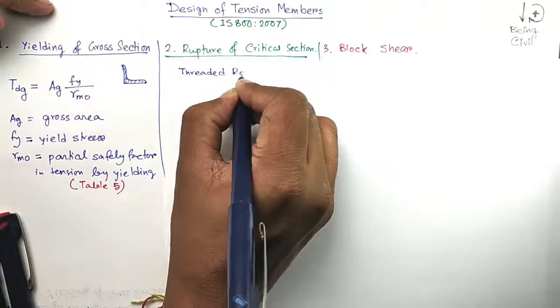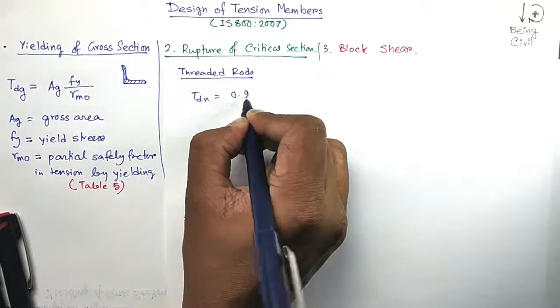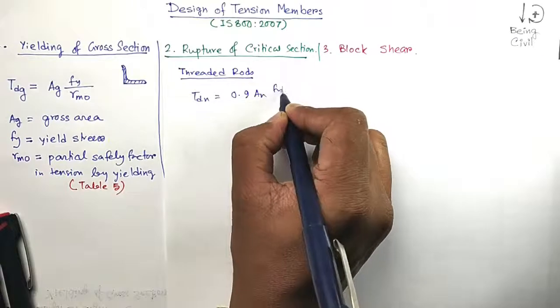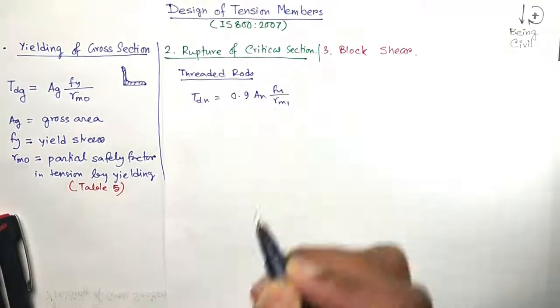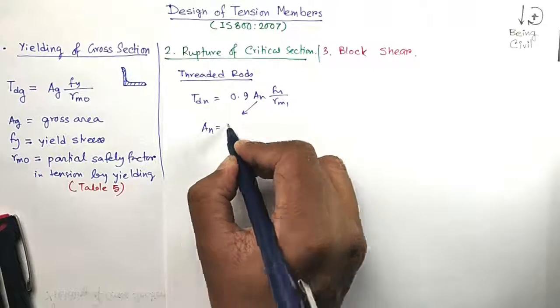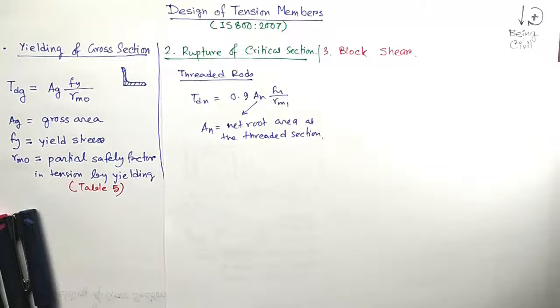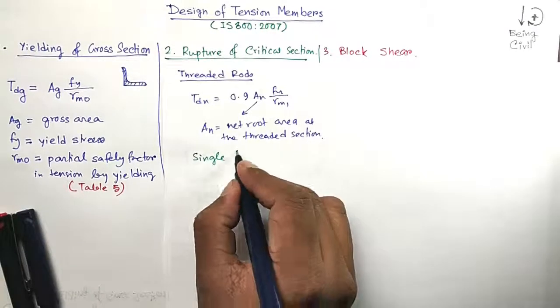Now for threaded rods, the value is TDN = 0.9×AN×FU / γM1. The formula is the same, but AN is the net root area at the threaded section.